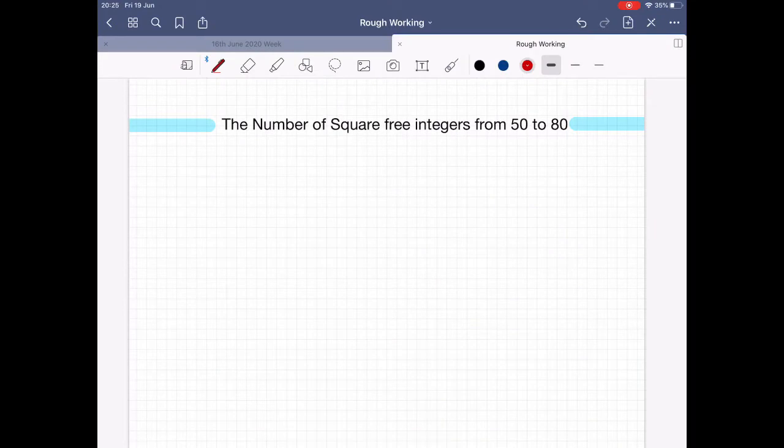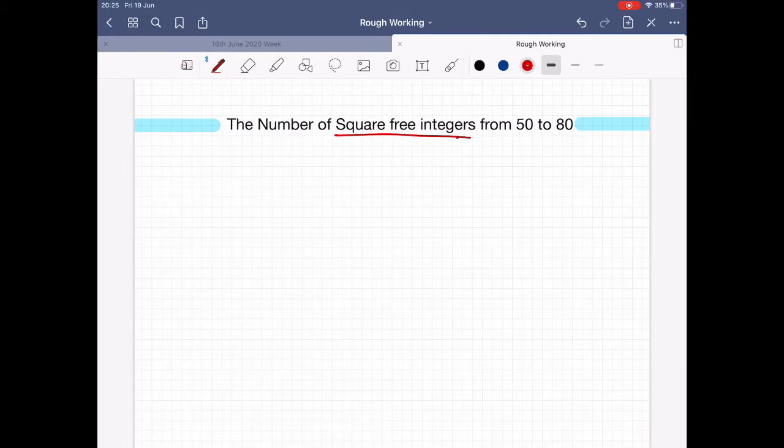The number of square-free integers from 50 to 80. Let's just clarify what a square-free integer is. An integer is a number, and for a square-free integer we need an integer that is not divisible by any squares.